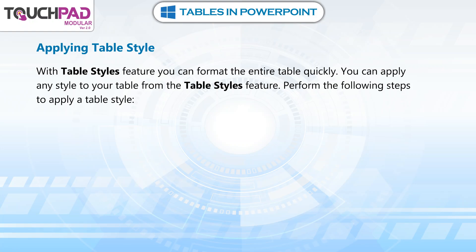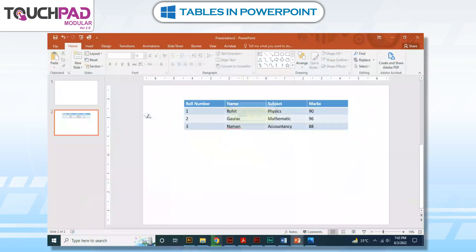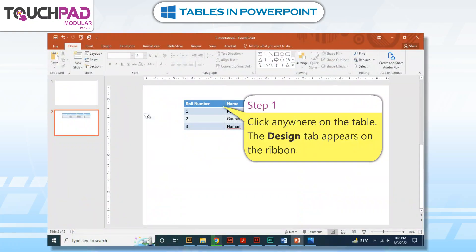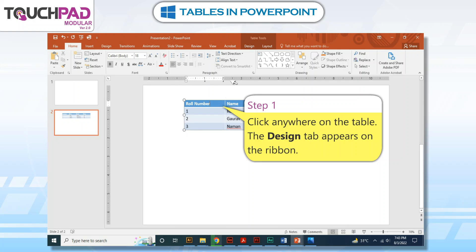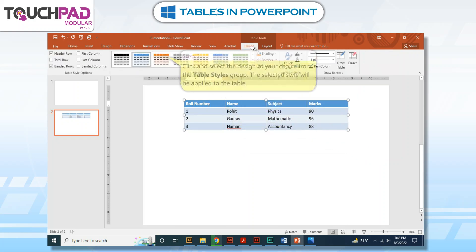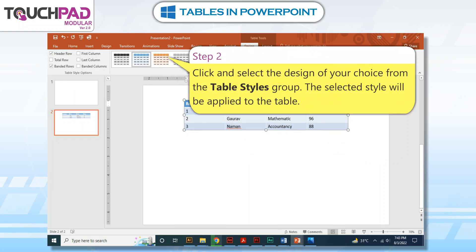Perform the following steps to apply a table style. Step 1: Click anywhere on the table; the Design tab appears on the ribbon. Step 2: Click and select the design of your choice from the Table Styles group. The selected style will be applied to the table.